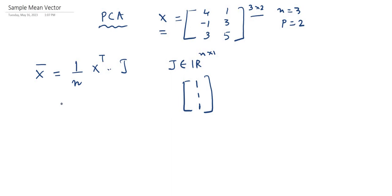So ultimately, if we put it into the formula, let's do this. X transpose will look like something like this: [4, -1, 3; 1, 3, 5]. So now if we put it into the formula, what is the value? n is 3, X transpose is [4, -1, 3; 1, 3, 5], and corresponding J is [1, 1, 1].